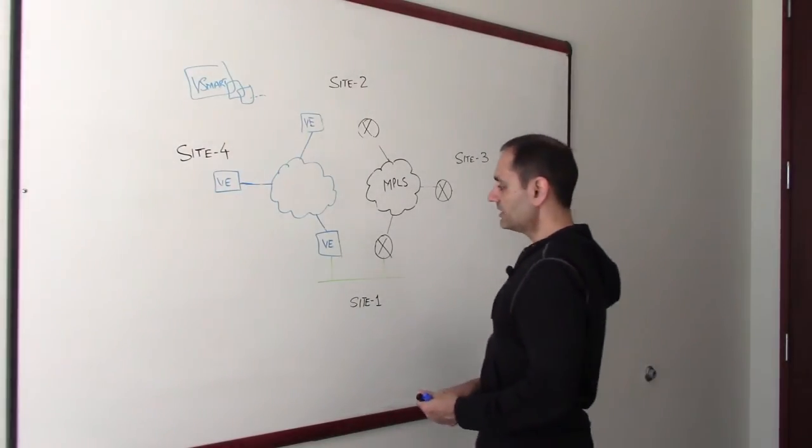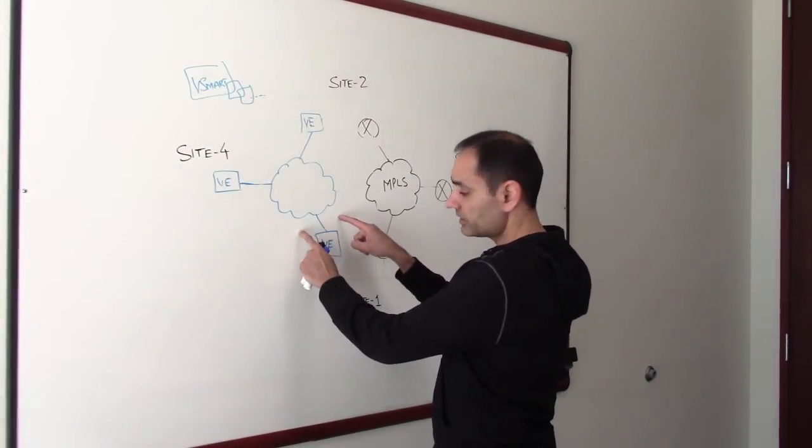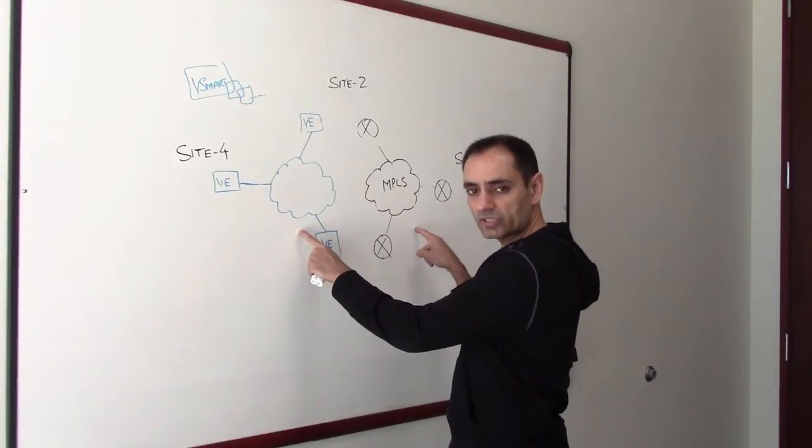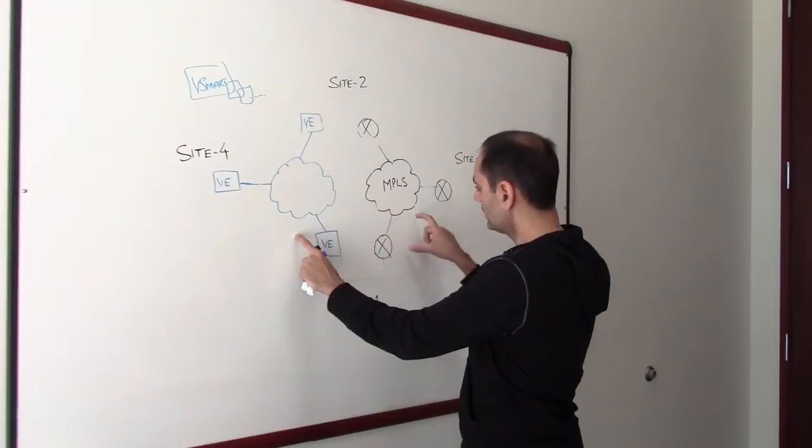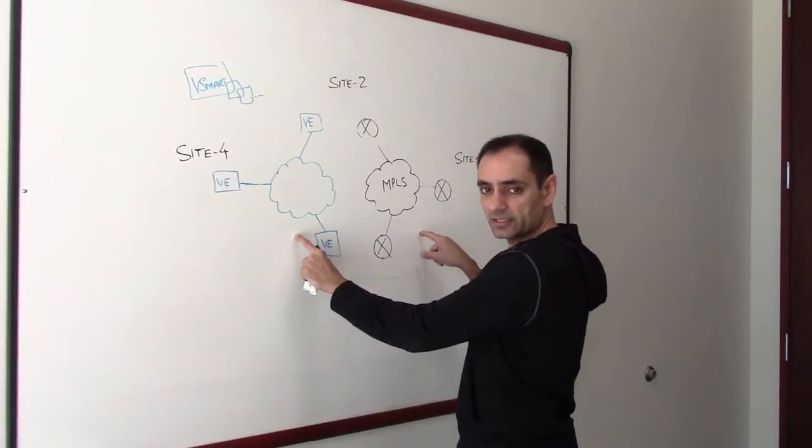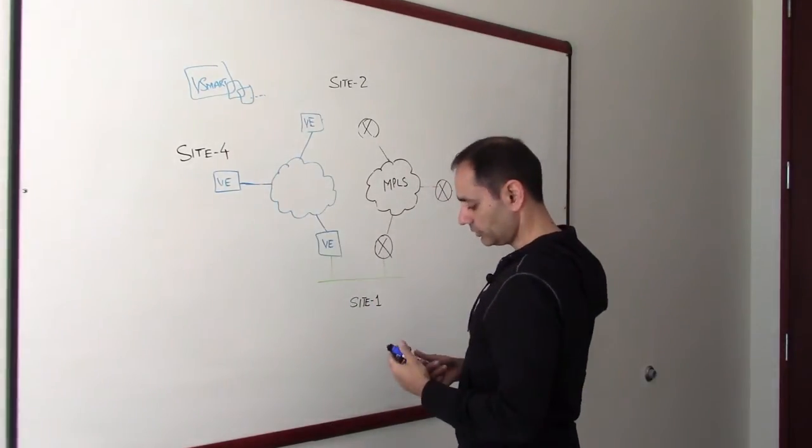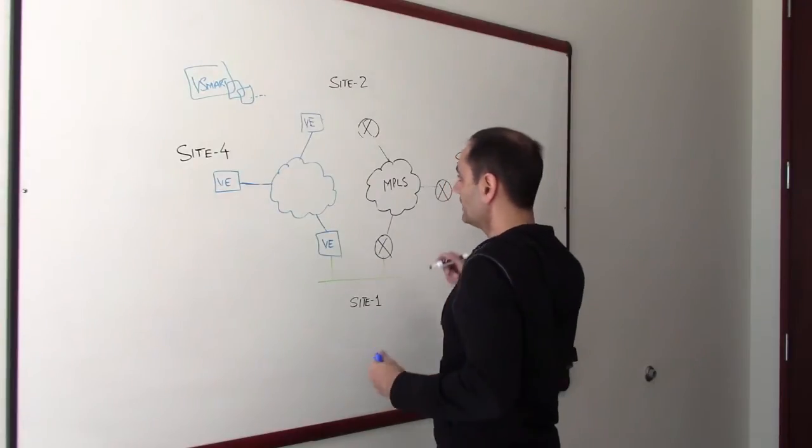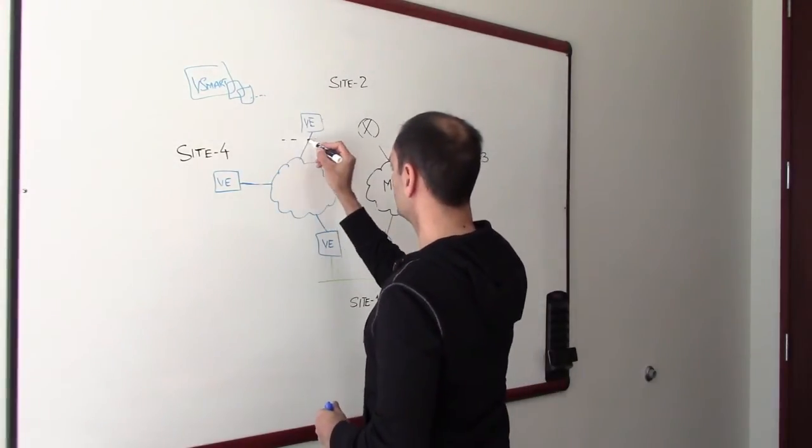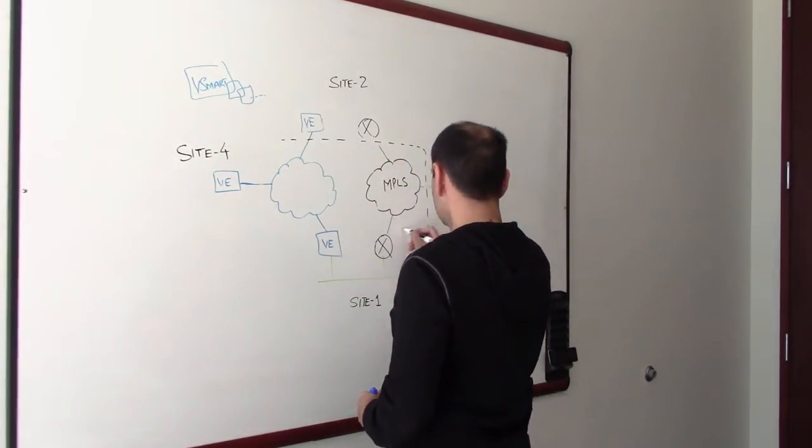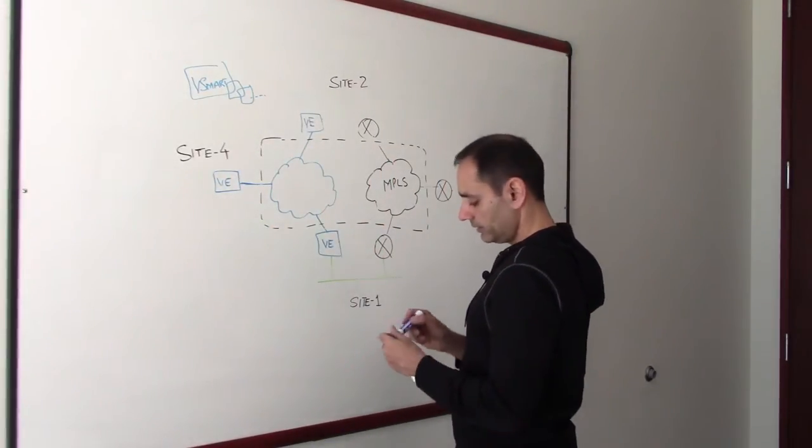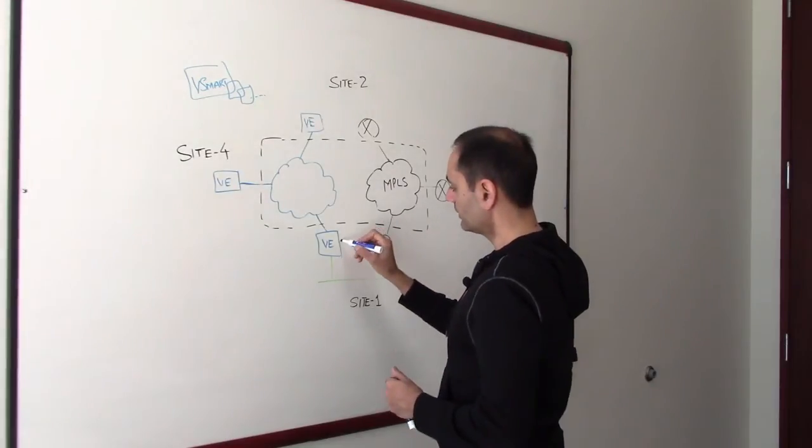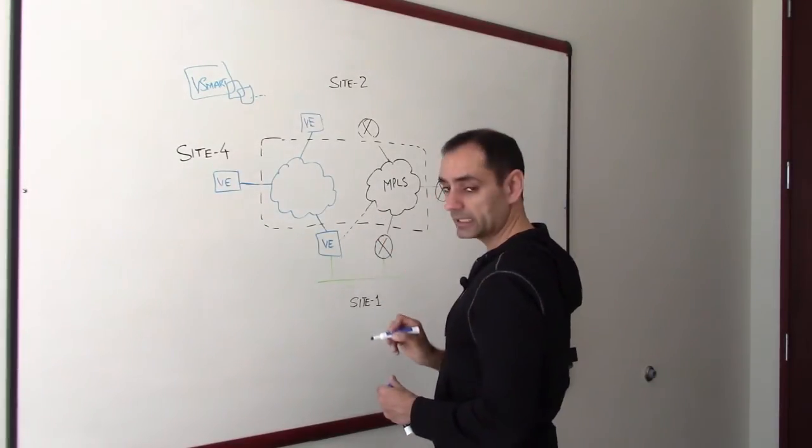The other option is where you can orchestrate an overlay on both transports. So rather than having overlay on the internet and using MPLS as is, you can orchestrate the overlay in such a manner that it spans the two transports. In this case, if you look at site one, there are two options. One is where you can connect the V-Edge directly to MPLS.